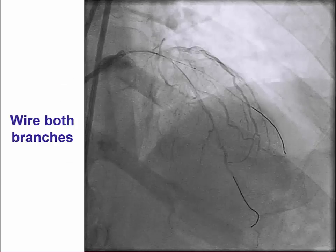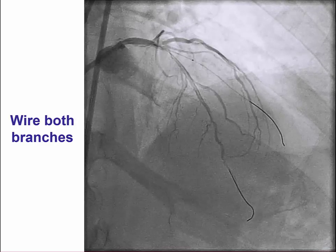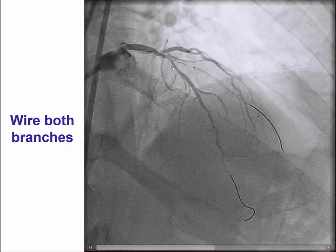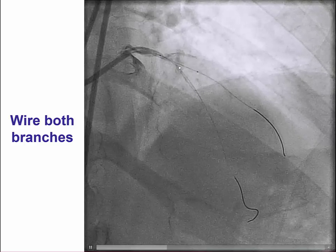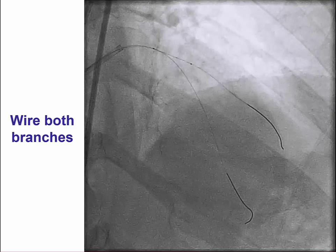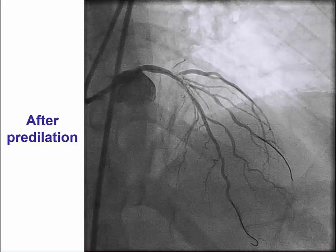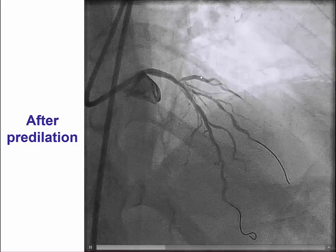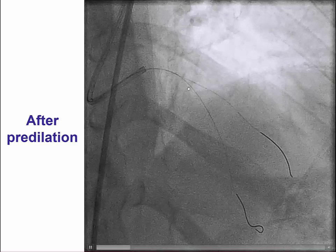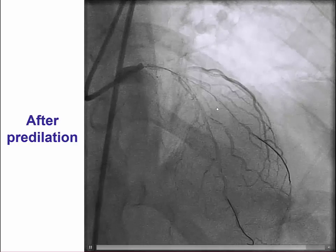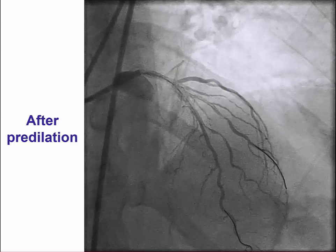So how is this DK CRUSH performed? The first step, as with any bifurcation, is to advance guide wires in both branches. We have a guide wire in the diagonal as well as the LAD. Then both branches are predilated to ensure good stent expansion. Balloon angioplasty was done on the diagonal and in the main vessel with a 2.0 mm balloon, demonstrating some dissection in the main vessel as well as the side branch ostium, which may increase the risk of side branch occlusion when a stent is placed in the main vessel.